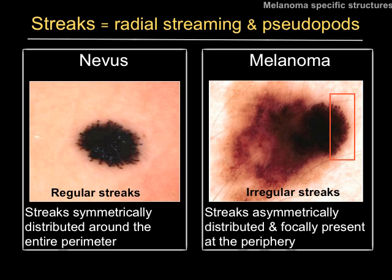Streaks are most commonly encountered in Spitz nevi and in melanoma. Regular streaks are defined as streaks present around the entire perimeter of the lesion, and regular streaks are diagnostic of pigmented Spitz nevi. Irregular streaks are those found focally at the periphery of a tumor, and they are one of ten important melanoma-specific structures that every dermoscopist should be able to identify.